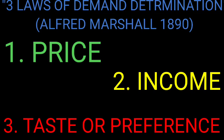If the price is affordable for every strata of society — the bottom of the pyramid, middle of the pyramid, and the top of the pyramid — then consumers are going to consume your product. Because the price is affordable and alluring, your product is going to become the dancing doll, the blue-eyed boy in the market.